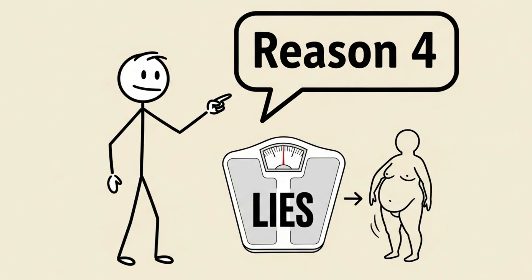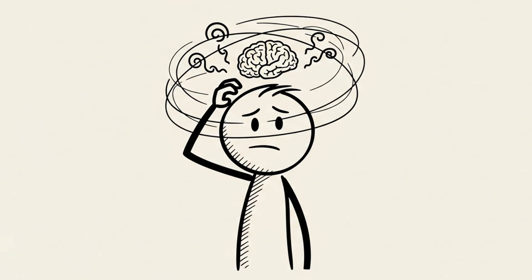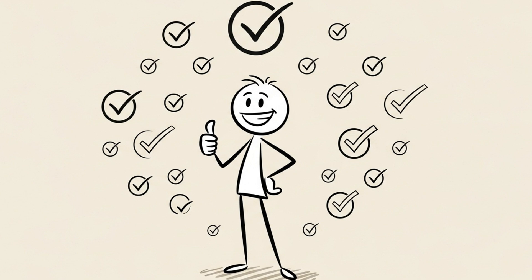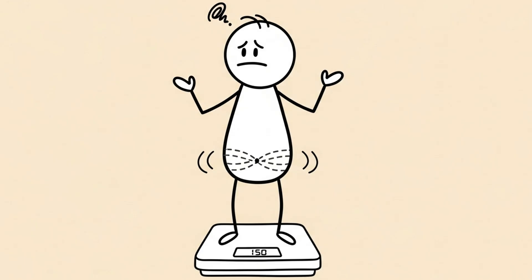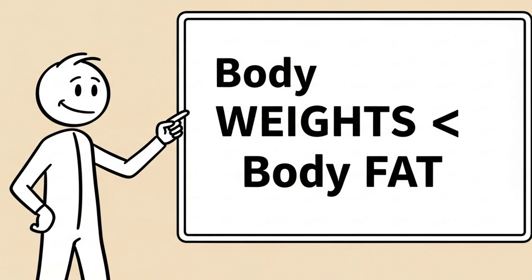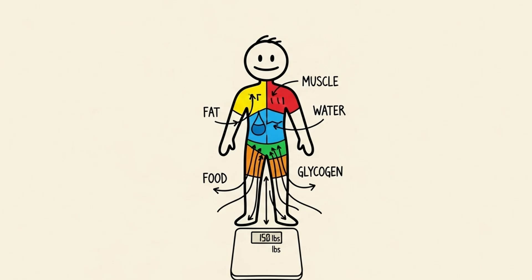Reason 4. The scale is lying to you. You are losing fat. This is the fourth and final reason, and it's the most psychological. It's possible you are doing everything right. You're in a real deficit. You are actually losing body fat, but the scale isn't reflecting it. You have to understand, your body weight is not your body fat.